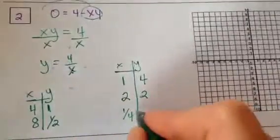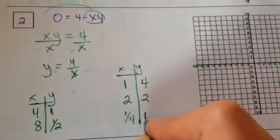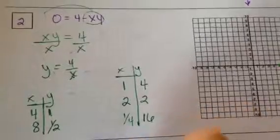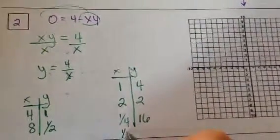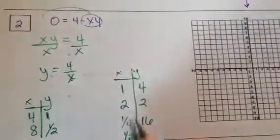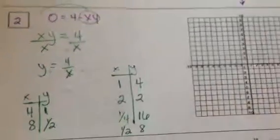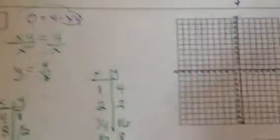What if I plug in a 1 fourth? Plug that in. 4 divided by 1 fourth is 16. How about, if I plug in a half, 4 divided by 1 half is 8. Is that going to give us enough to kind of see what it's going to look like? Let's plug those in and see.